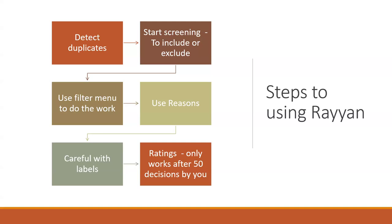You can also use labels, but be careful — unlike reasons, labels are not a set dropdown and you can type in anything, so be consistent. Then there are ratings: after you make 50 inclusion/exclusion decisions, the AI generates recommendations. The more decisions you make beyond 50, the better the AI recommendations become.